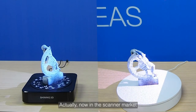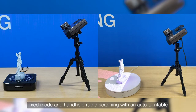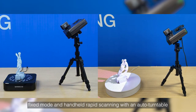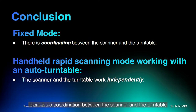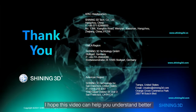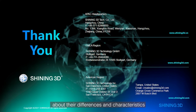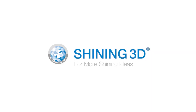Actually, now in the scanner market, there might be a misunderstanding between fixed mode and handheld rapid scanning with an auto turntable. These two methods look similar. However, there is no coordination between the scanner and the turntable if you use a turntable that turns around constantly and automatically. I hope this video can help you understand better about their differences and characteristics. I hope to see you in the next video.